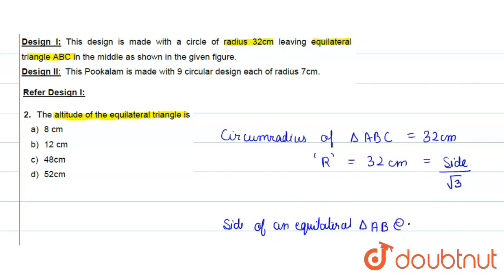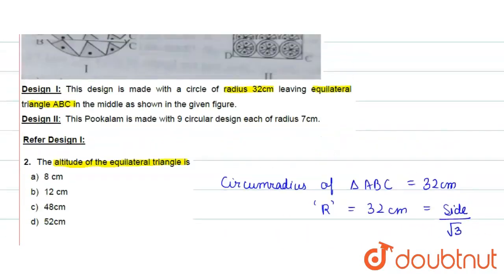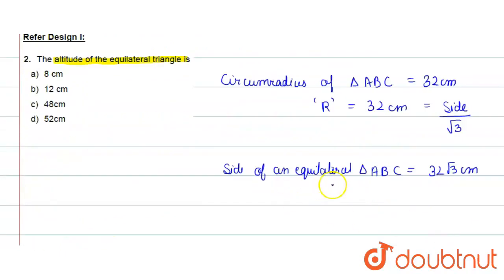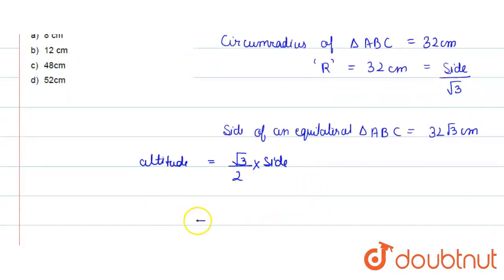So, here we have 2, 16, 32 cm, and here we have 16 times root 3 times root 3, which is equal to root 3 times root 3, which is equal to 16 times 3, which is 48 cm.